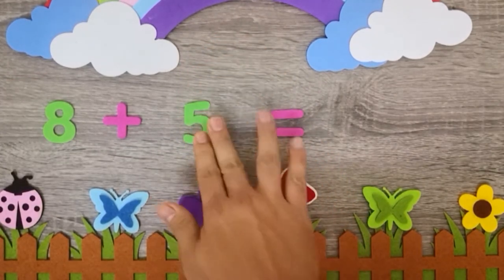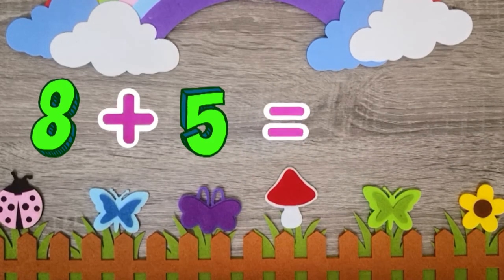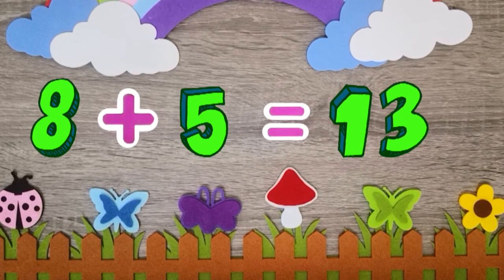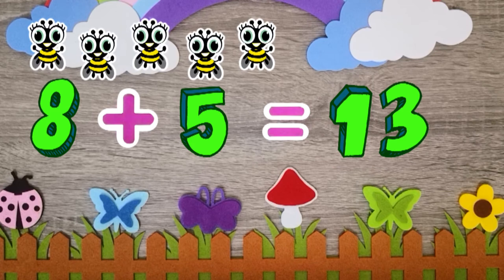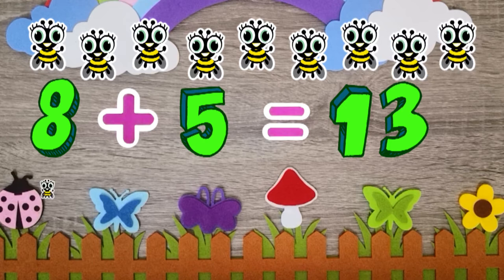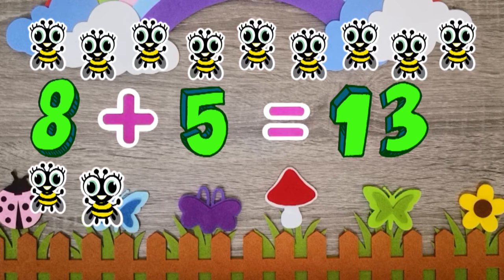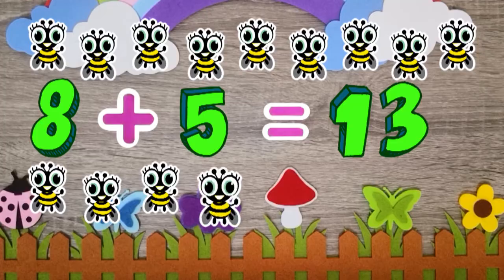8 plus 5 equals 13. 1, 2, 3, 4, 5, 6, 7, 8, 9, 10, 11, 12, 13.